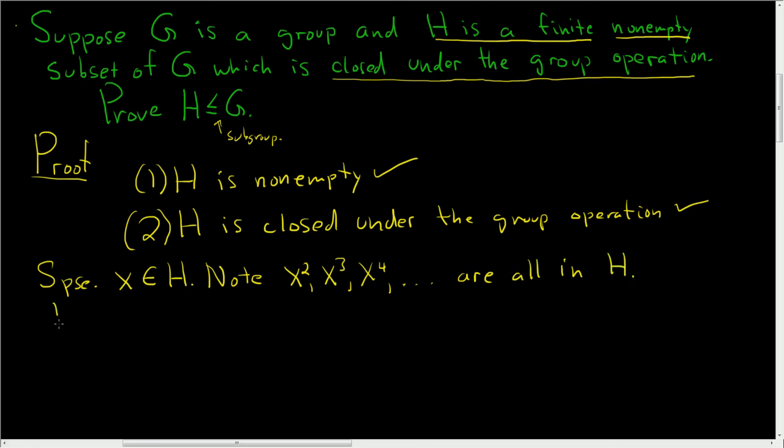But H is finite. That means at least two of these must be the same. So there exists distinct positive integers M, N that are positive integers, M not equal to N, such that X to the M is equal to X to the N.